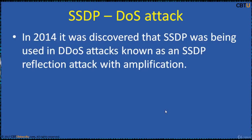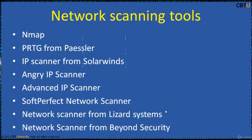In 2014, it was discovered that SSDP was being used in DDoS attacks known as SSDP reflection attacks with amplification. DDoS is Distributed Denial of Service. Many devices have a vulnerability in the UPnP software that allows an attacker to get replies from port number 1900 to a destination address of their choice. With a botnet of thousands of devices, the attacker can generate sufficient packet rate and occupy bandwidth to saturate links, causing a denial of service attack.